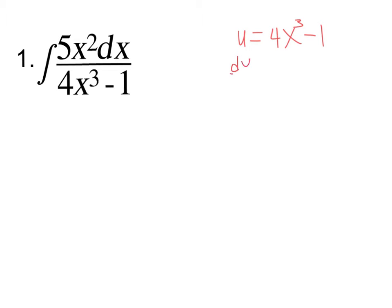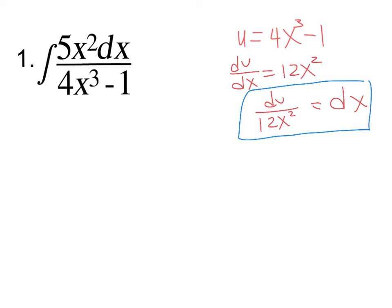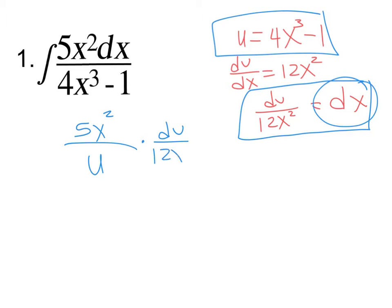Alright, so du dx equals 12x squared. And then I'm going to solve for dx, du over 12x squared. A lot of other teachers teach this differently, but I like my method. Alright, so then we make our substitution for dx and for u. I'm going to get rid of my 4x cubed minus 1, so u on the bottom. 5x squared stays and then I'm going to replace my dx with du over 12x squared. The x squareds cancel, the numbers don't, that's okay.